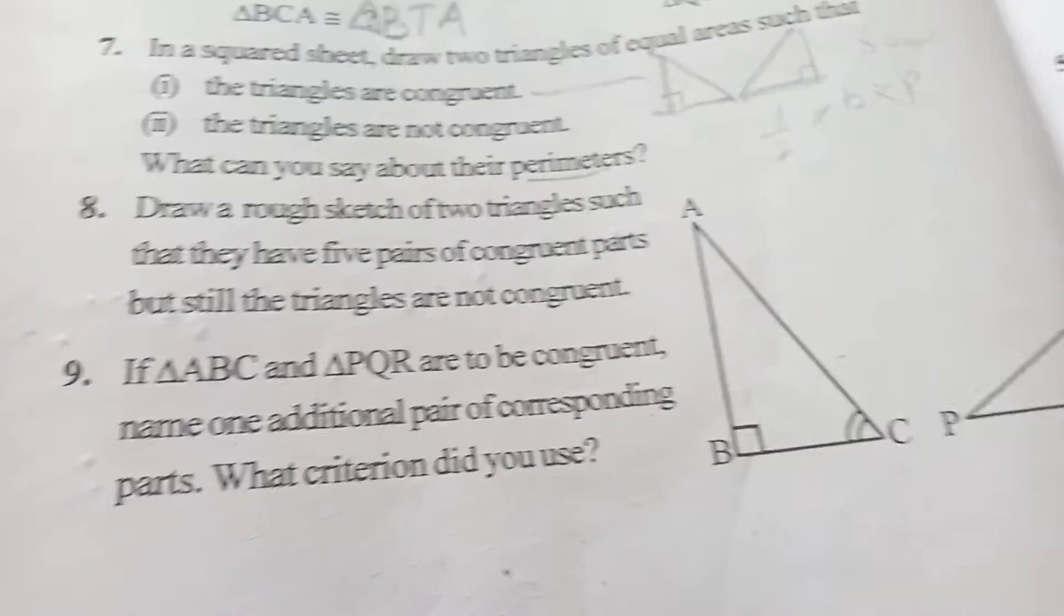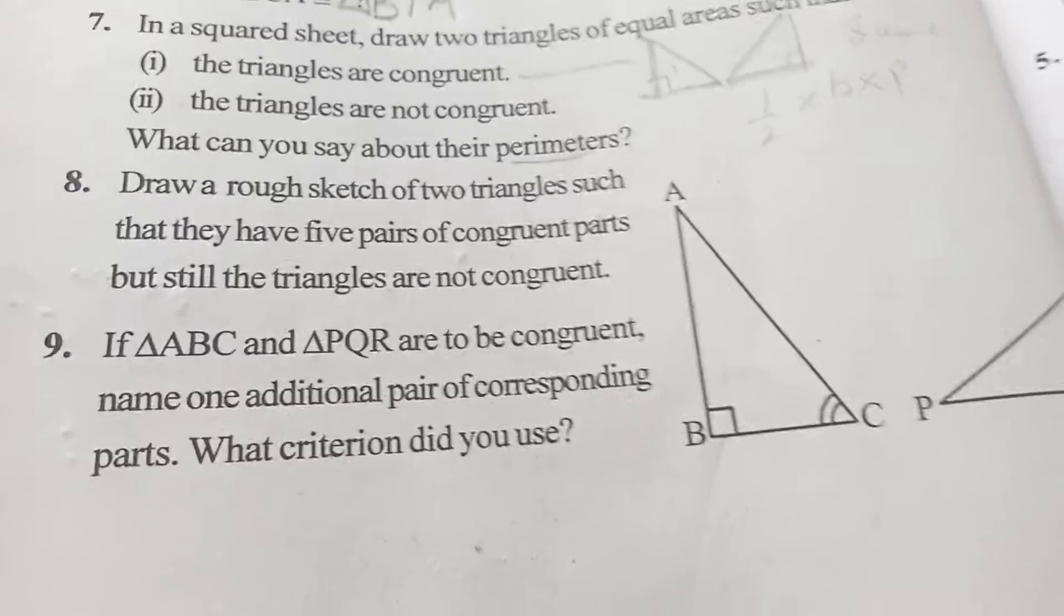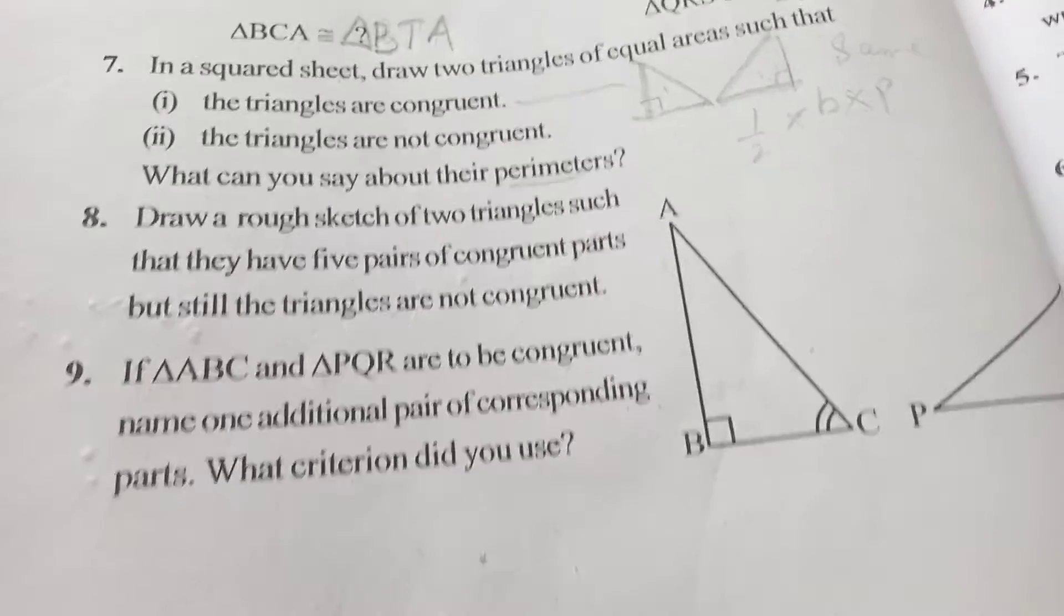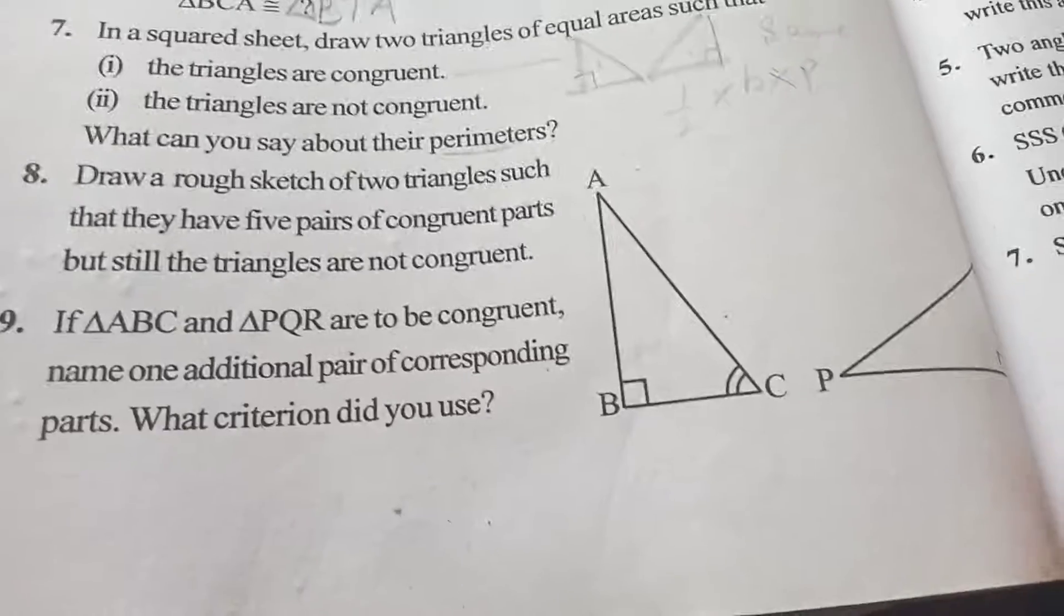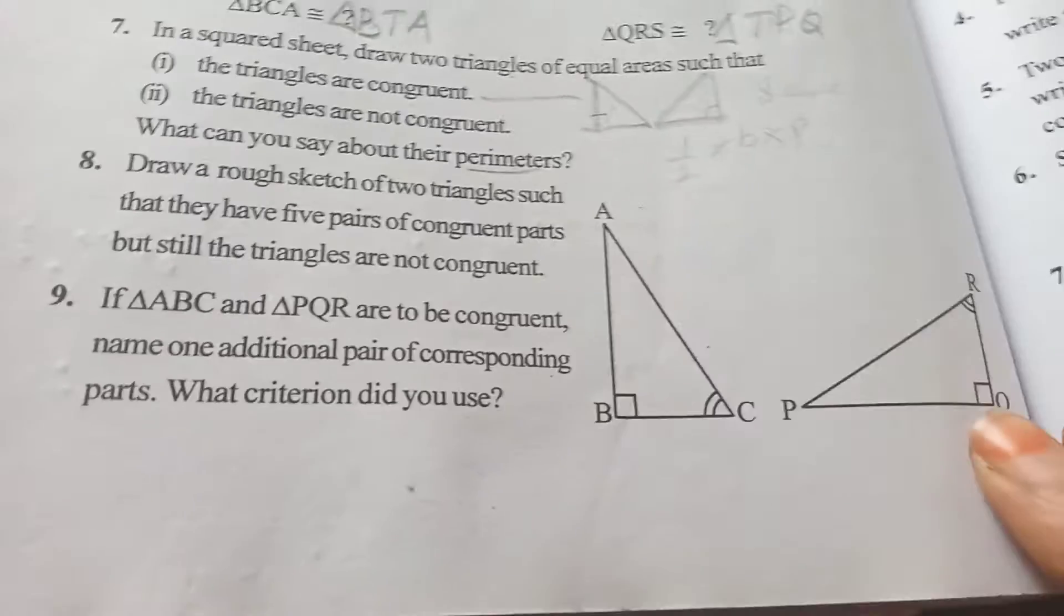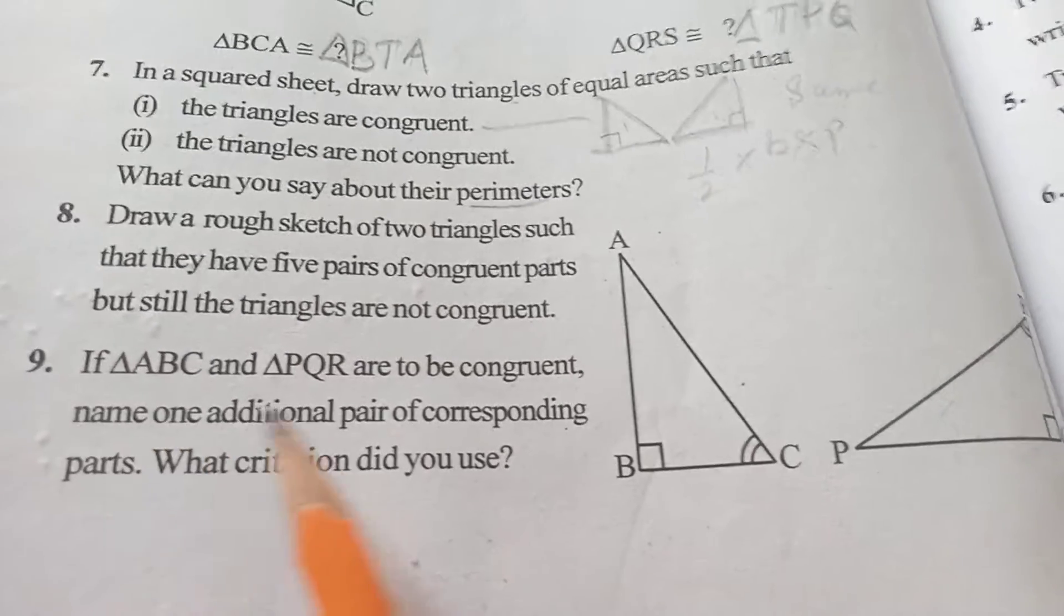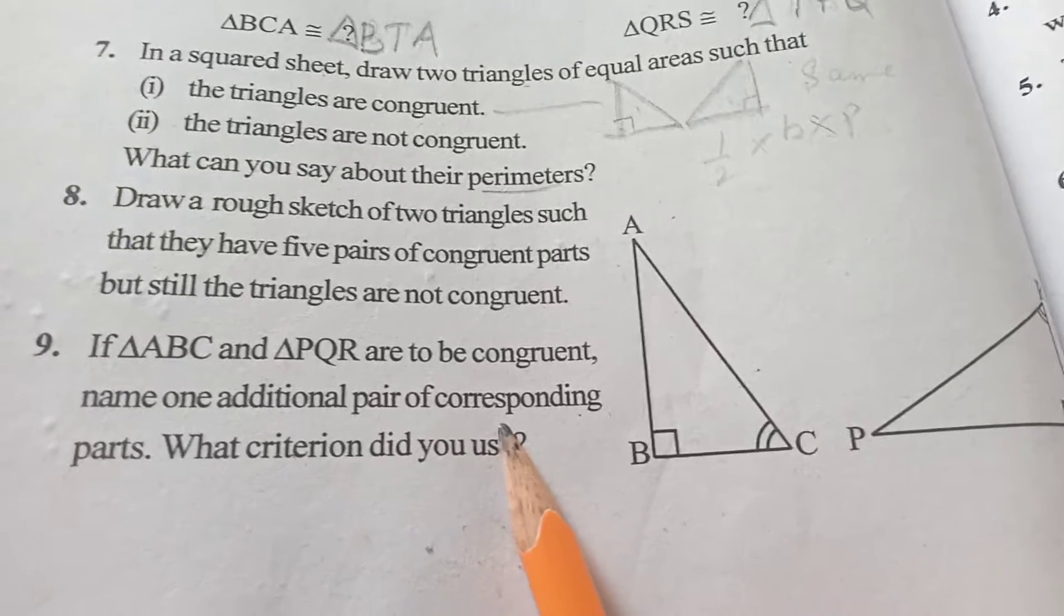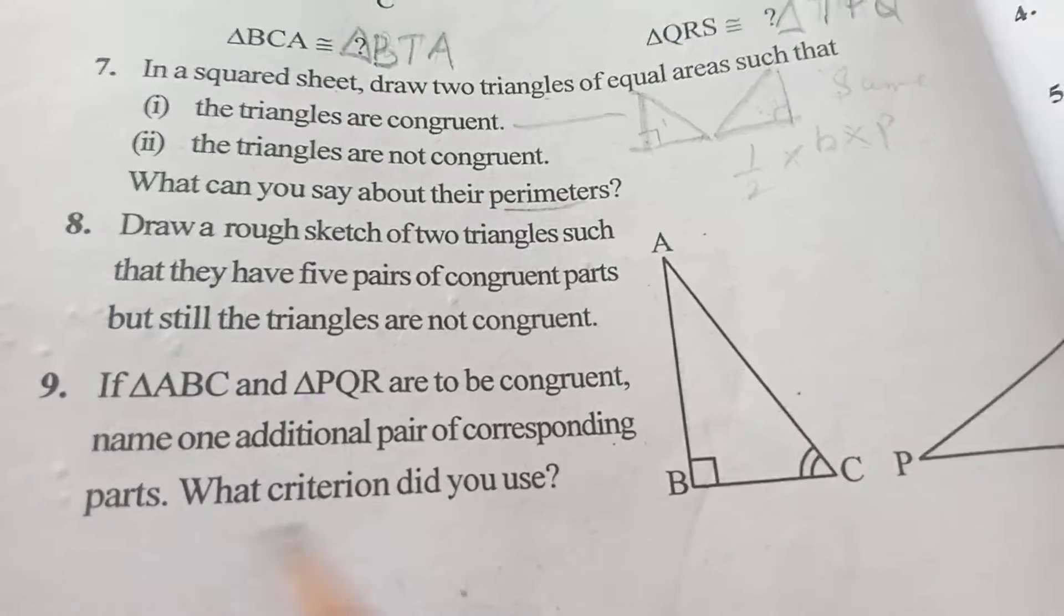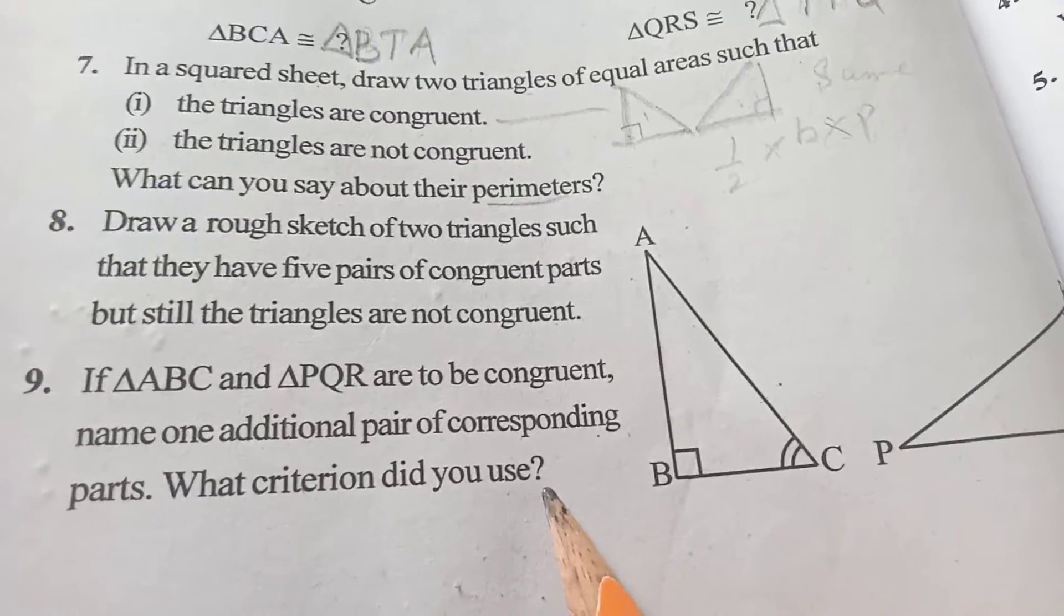So here what is given? Here two triangles are given, triangle ABC and triangle PQR. As you can see here in the given figures, these both are congruent. Name one additional pair of corresponding parts. What criteria did you use?